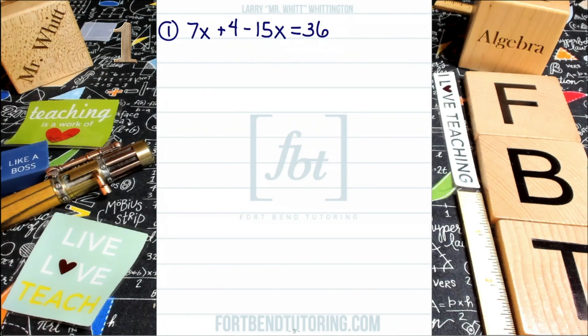Notice how 7x and negative 15x contain the same variable x to the first power. That means that these two terms, 7x and negative 15x, are like terms. You're going to combine those first. Combining positive 7x and negative 15x together, you'll end up with negative 8x. Bring down the positive 4 and this equals 36.